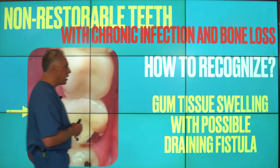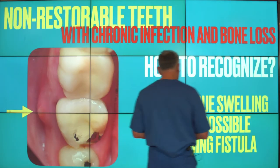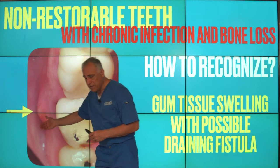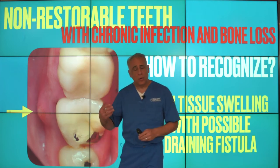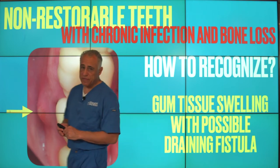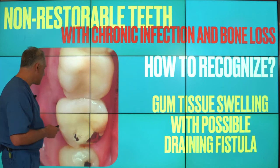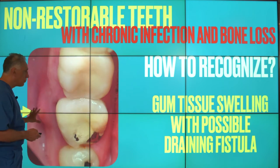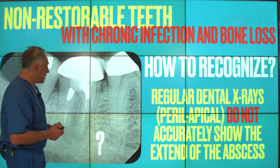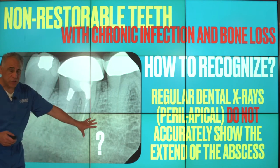You might also recognize it by the presence of a gum tissue swelling with possible drainage of infection or purulence. This is known as a draining fistula, otherwise known as a gumboil. Or you might also recognize it on regular dental x-rays.